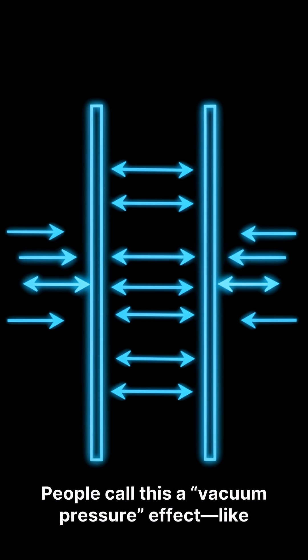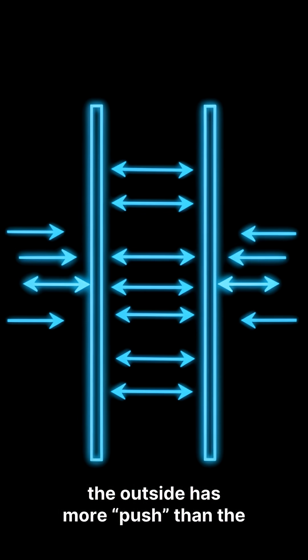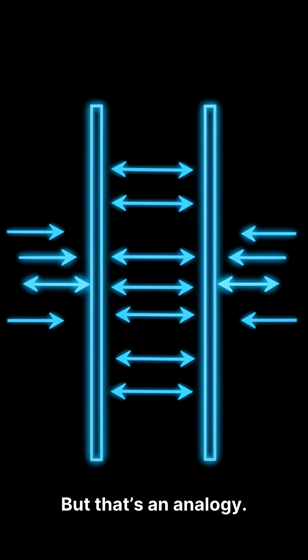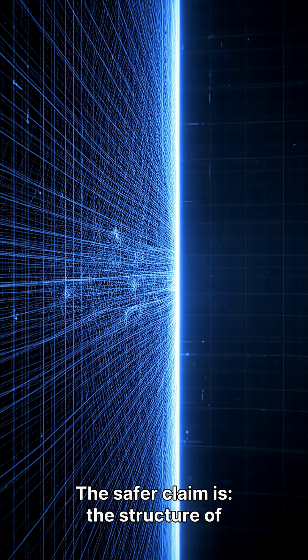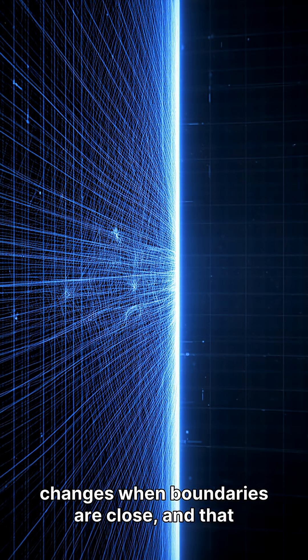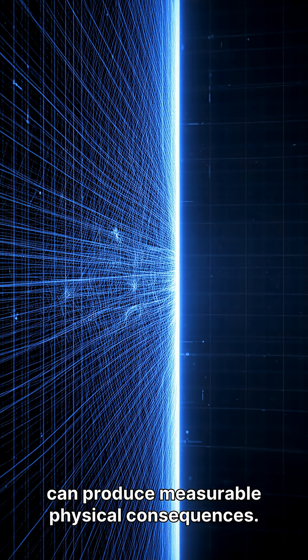People call this a vacuum pressure effect, like the outside has more push than the inside. But that's an analogy. The safer claim is the structure of the quantum vacuum and allowed field modes changes when boundaries are close, and that can produce measurable physical consequences.